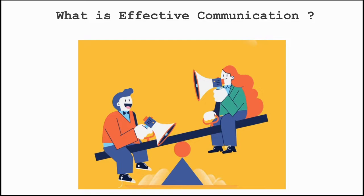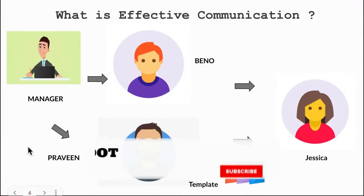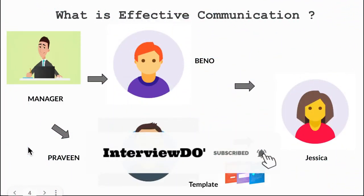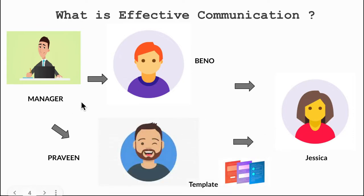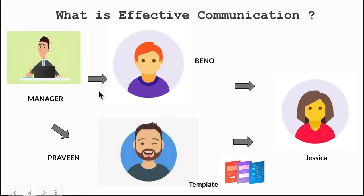Let's see a simple example to understand effective communication. There is a manager who asked Benno to get more details about a new feature from Jessica. Benno sets up a meeting with Jessica, asks a lot of questions, and collects information, but when he goes back to the manager, the manager asks more questions. So Benno has to go back to Jessica again. There is a lot of back-and-forth between the manager, Benno, and Jessica. This is not effective — there is chaos.